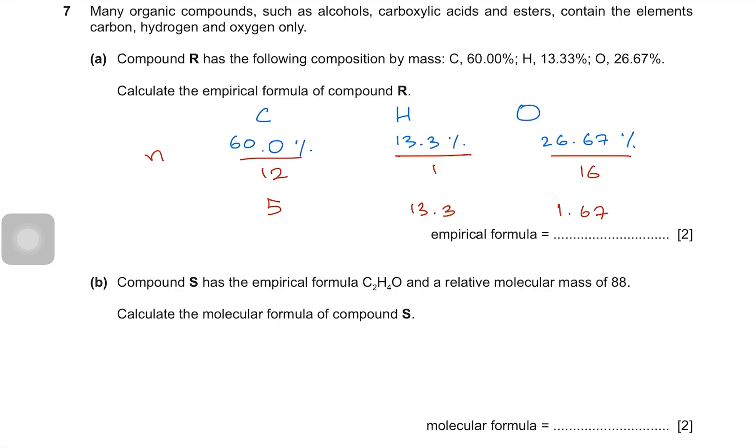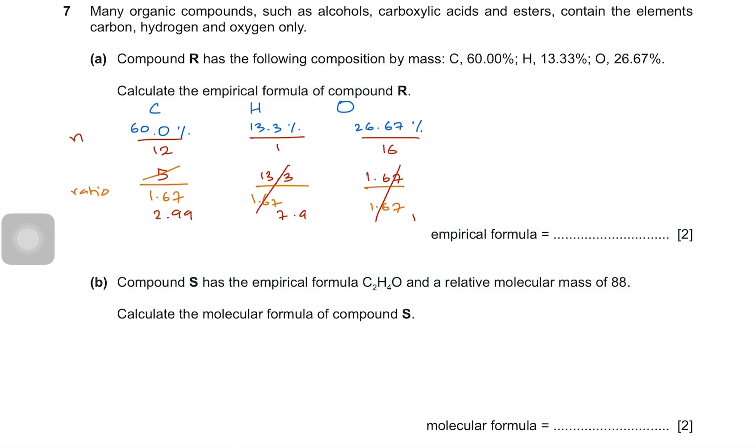Then we find the molar ratio. So for ratios, we divide everything by the smallest value, which is 1.67. 13.3 divided by 1.67 and obviously 1.67 divided by the same value. Oxygen gives us a ratio of 1, which is almost 1. Hydrogen is 8. And when 5 divided by 1.67 is done, it gives us a value of 2.99. So carbon is almost 3. Hydrogen is 8. Oxygen is 1. So C3H8O.